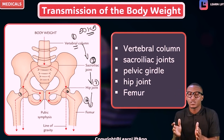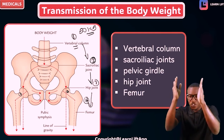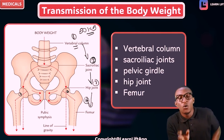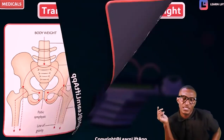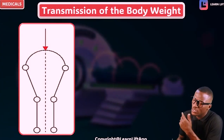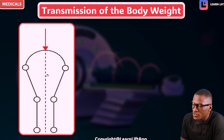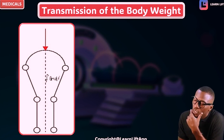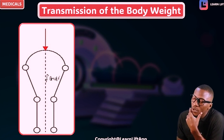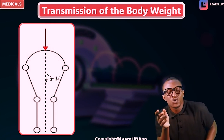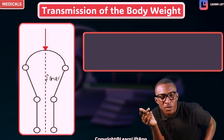Take note that the two femurs are not straight — the two femurs are oblique. The reason why they are oblique is to support the body weight. You can see from the diagram that the femurs are in an oblique position. To support the erect posture of the body effectively, the femurs are said to be oblique.